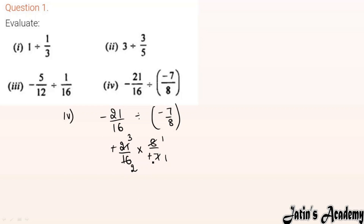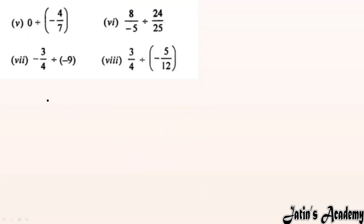Now cancel: 7 goes into 21 three times, and 8 goes into 16 twice. You can cross-cut or cancel top and bottom — only cross-cut or up-down cancel is allowed, not same-side. So the answer comes out to 3/2.